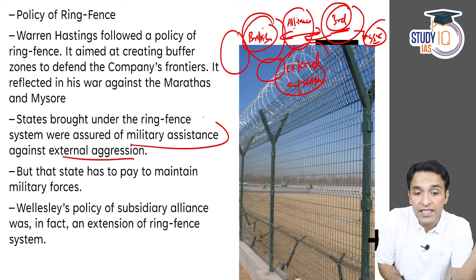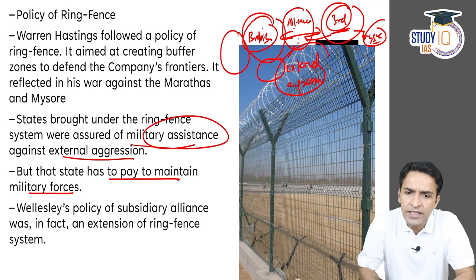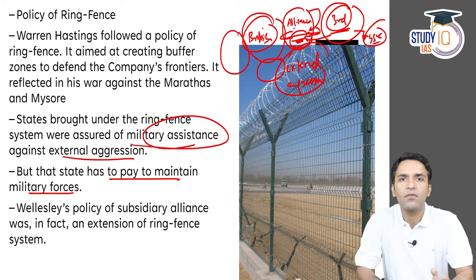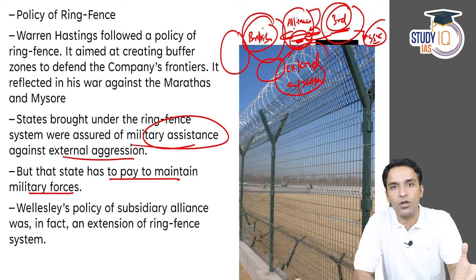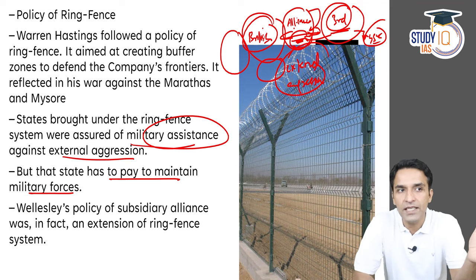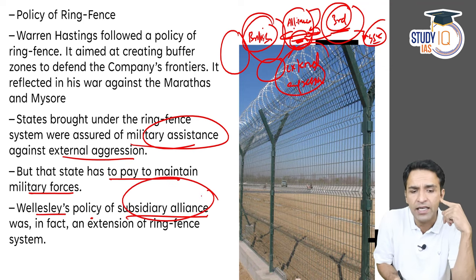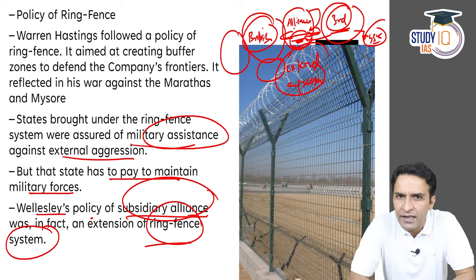For external aggression there was military assistance, but the buffer state had to pay to maintain the military forces — meaning they were financing the British East India Company army. If you see it in retrospect, it was kind of a loss for them. Wellesley's Subsidiary Alliance was basically a new evolution, a new version of this ring fence system.